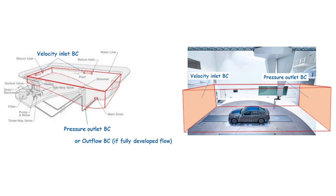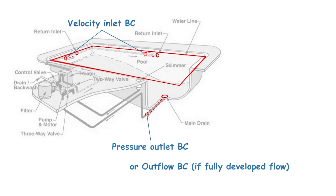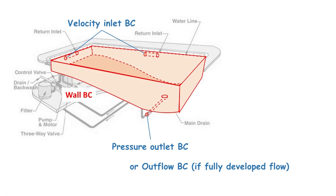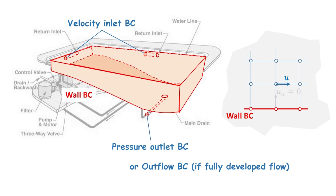The most intuitive way to apply the wall boundary condition is to set all domain boundaries adjacent to a solid wall as the wall boundary condition. For example, for the swimming pool domain, the four sides and the bottom boundaries are adjacent to solid walls, so they should be set as wall boundary conditions. The same applies to the pipe flow boundaries. Since fluid cannot pass through a wall, the normal component of velocity relative to the wall is set to zero. Also, because of the no-slip condition, the tangential component of velocity is set to zero as well.